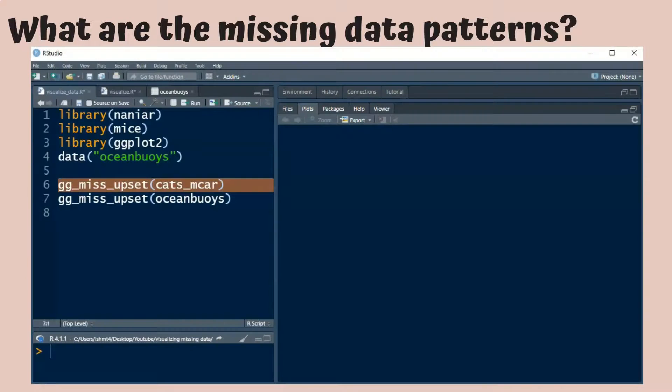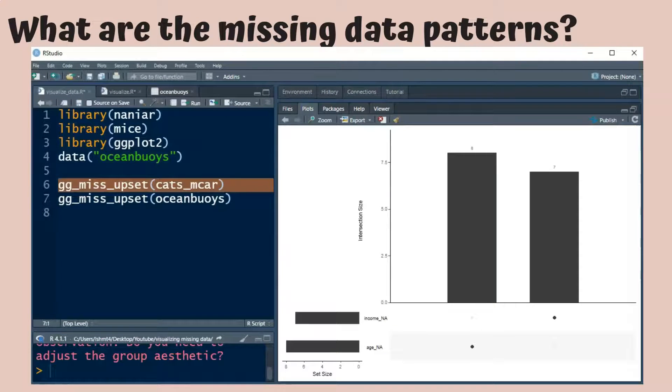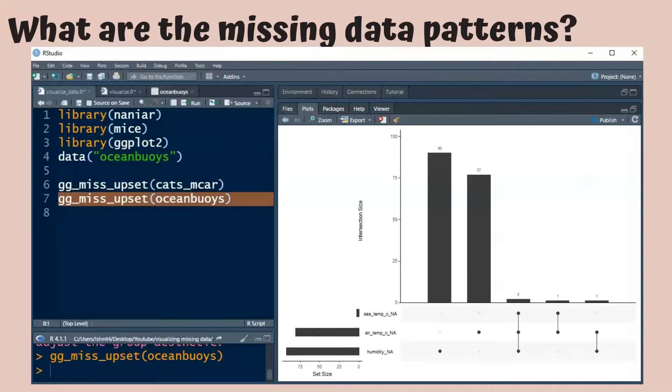An alternative way to plot these patterns is by the gg miss upset command in Narniar. Here there is a bar representing the number of missing values for each variable. And in the cats MCAR data set, we don't have any observations where multiple variables are missing. But if we look at the plot for the ocean buoys data set, we see that these connected dots here illustrate that all three variables are missing for two observations, and sea temp and air temp are missing for one observation, and so on.